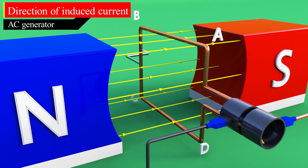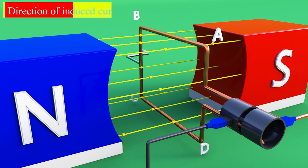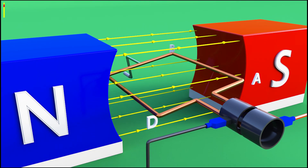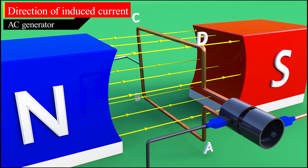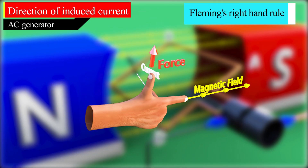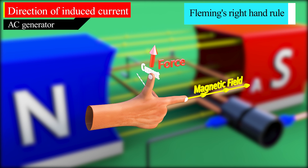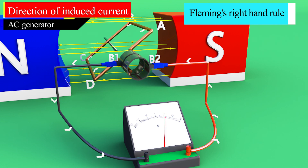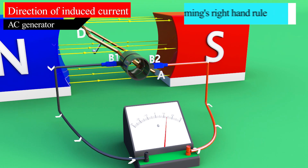When current is induced in the armature, it is necessary to know the direction of that induced current. Initially, armature coil ABCD is in a vertical position, with part AB up and part CD down. The direction of the magnetic field is from north to south pole. After half a rotation in the clockwise direction, part AB goes down while part CD goes up. According to Fleming's right hand rule, the thumb indicates the direction of movement of part CD, which is upward. The first finger points in the direction of the magnetic field from north to south pole, and the second finger shows the direction of induced current. In this case, current flows in the direction DCBA of the armature and from brush B1 to brush B2 through the galvanometer.